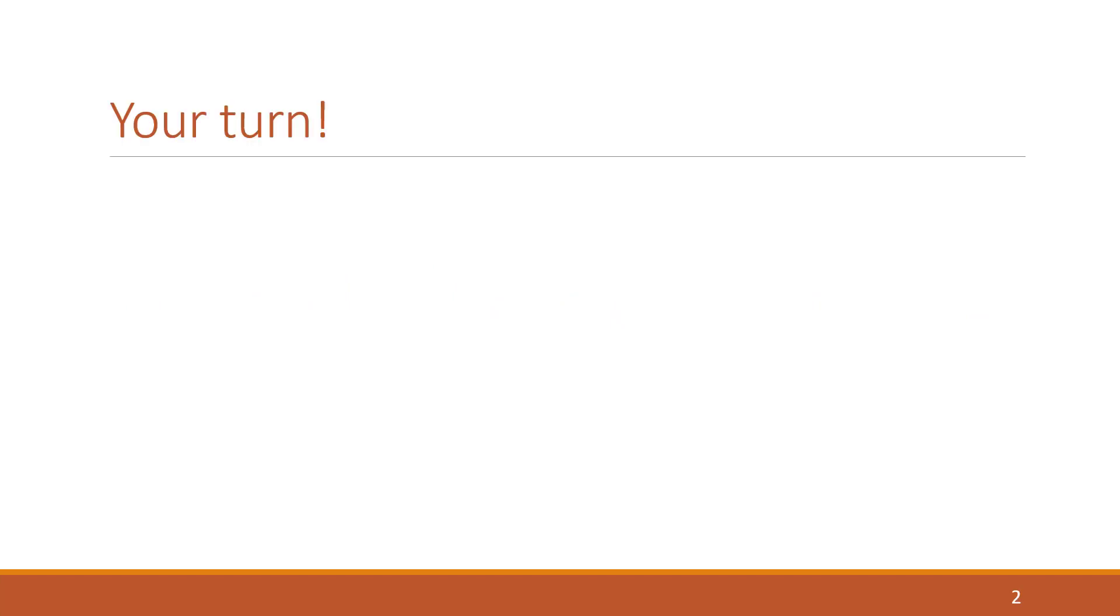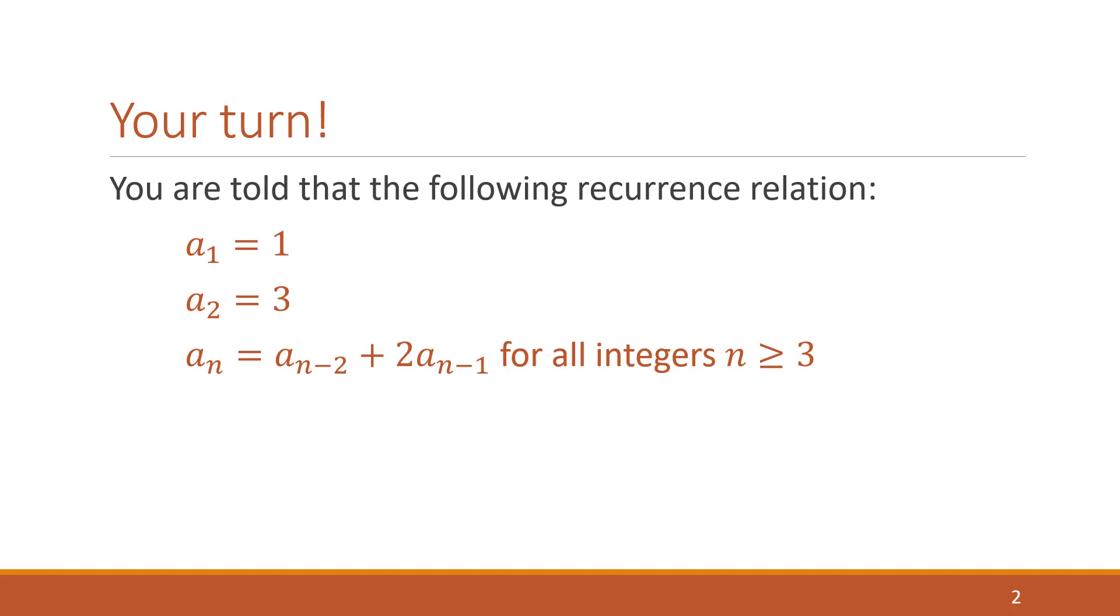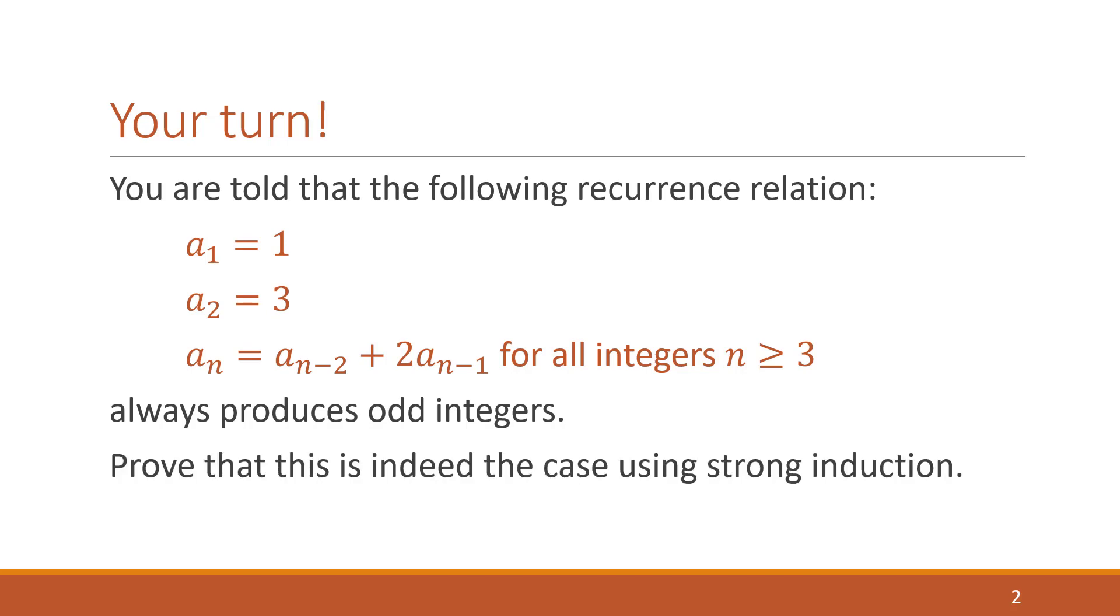So this one, I want you to pause the video after I explain the problem and try to solve this yourself. You're told that the following recurrence relation always produces odd integers. What I'd like you to do is pause the video and prove that this is indeed the case using strong induction.